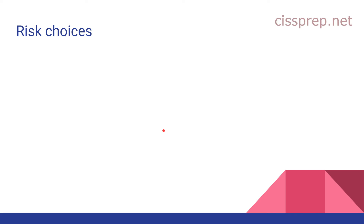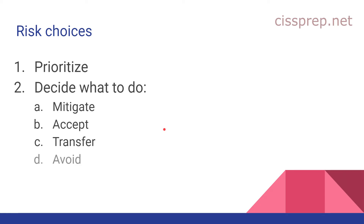Next we look at a small change to the risk choices available to management. They basically only added a precursory step of prioritizing the risk before choosing one of the four options. When they say prioritize, they mean in terms of safety — so which risks in your organization will have an impact on human safety? That's the one we take care of first, and then we decide how to handle it by choosing one of the four options, which you should already be familiar with.